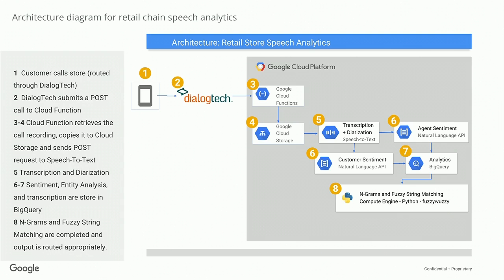Some of the things we were looking for in the BigQuery output: fuzzy string matching, n-grams — just the frequency of words — and demand over time. So for a particular product, you can watch the demand over a year period to see if it's ramping during a certain season or declining. That's a really big deal. Using BigQuery and Python and some of the packages in Python allowed us to do that.